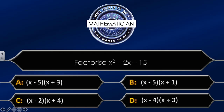Question seven: factorise x² minus 2x minus 15. The four possible answers are: A equals (x minus 5)(x plus 3); B equals (x minus 5)(x plus 1); C equals (x minus 2)(x plus 4); D equals (x minus 4)(x plus 3). I'm going to give you 30 seconds to answer this question, starting now.